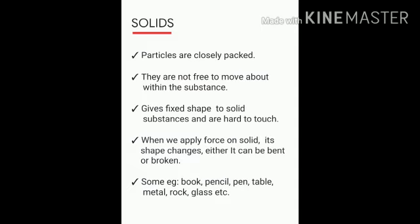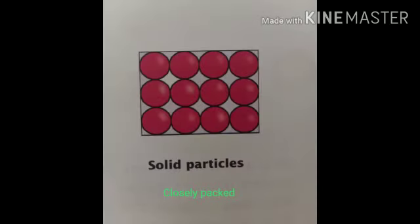When we apply force on a solid, it can be bent or broken. Some examples of solids are book, pencil, pen, table, metal, glass, rock etc.